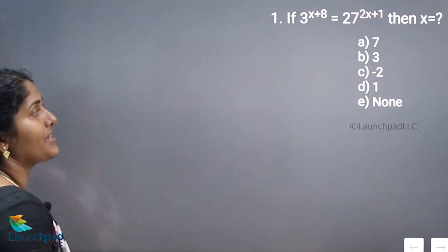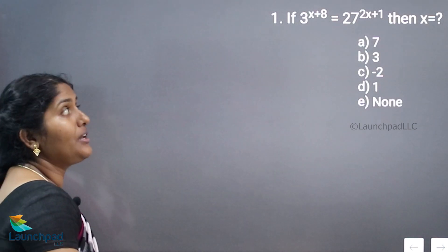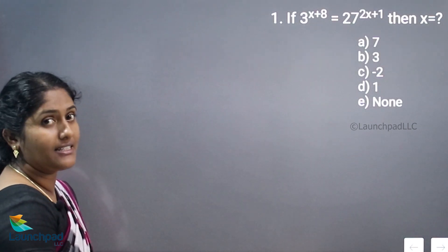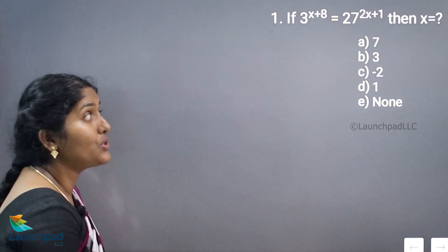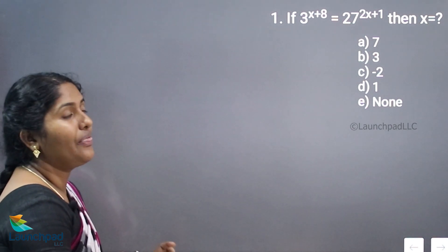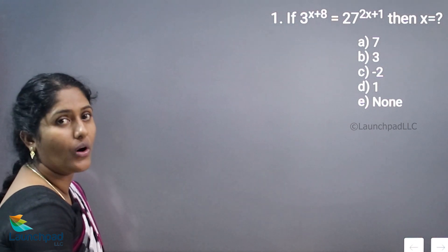Hello everyone. In this video we are going to discuss the next type of surds and indices rule. If 3 to the power of x plus 8 is equivalent to 27 to the power of 2x plus 1, then x is equivalent to what?